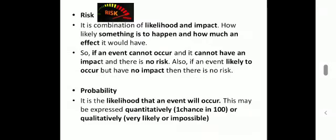What is risk as it relates to PRA? Risk is the combination of likelihood and impact — something that is going to happen is the likelihood, and how much effect it would have is the impact. If a pest does not come, there is no impact and no risk. If the pest comes but has no impact or effect, then there is also no risk. Risk depends on the event occurrence and its impact. Probability refers to the chances that the pest will occur — that is, the likelihood that an event will occur — and it may be expressed quantitatively or qualitatively.